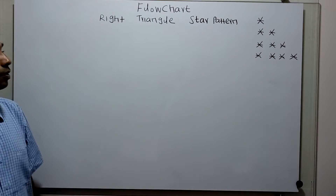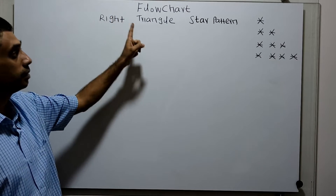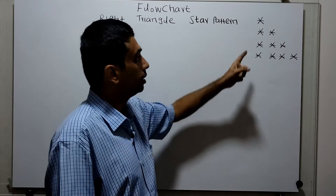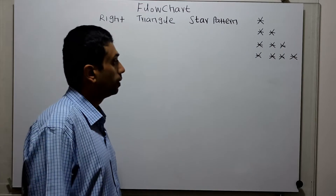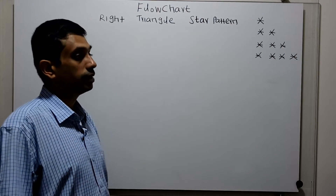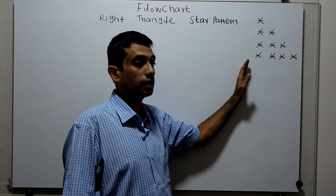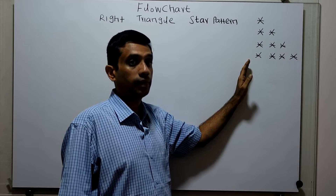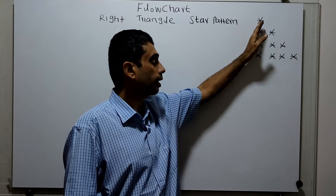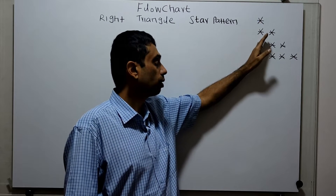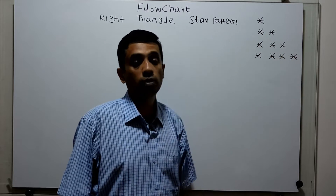Hello friends, we are going to draw a flowchart to print a right triangle star pattern. This is the right triangle star pattern. We have to obtain a range as input, and based on the range we print the stars. If the range is 4, then the 1st row has 1 star, 2nd row 2 stars, 3rd row 3 stars, and 4th row 4 stars. Like this we have to print.